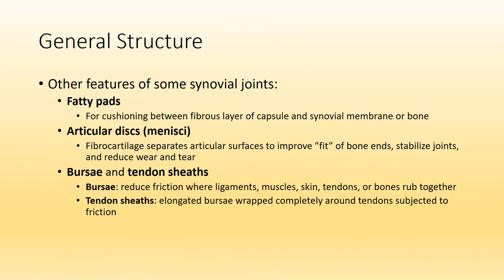In addition to the six characteristics, we also have some other features, such as fatty pads — which are just pads of fat providing extra cushioning. In certain joints we will find articular discs, also known as menisci. We have a medial and a lateral meniscus that belong to the knee joint. Those are rings of fibrocartilage that are great for compression and are also there to improve the fit of the bone ends, making sure they align perfectly with each other.